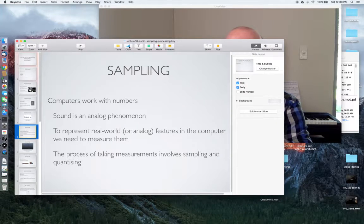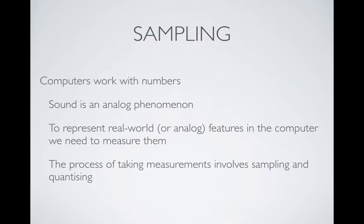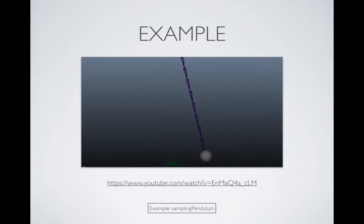That electrical signal is an analog phenomenon. Because computers work with numbers, we need to convert that analog electrical signal coming from the movement of the microphone into numbers so the computer can work with it. To represent these real-world or analog features — like sound or the movement of the microphone membrane — we need to measure them. The process of taking measurements involves sampling and quantizing, so we're going to look at what that actually means.